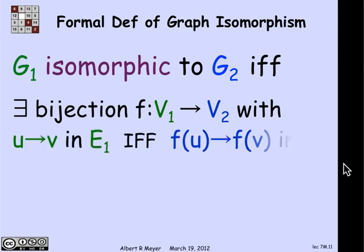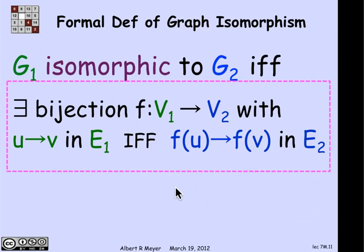With the property that if there's an edge between two vertices u and v in the first graph, then there's an edge between the corresponding two vertices f of u and f of v in the second graph. And that's an if and only if relation. There's an edge between f of u and f of v if and only if there's an edge between u and v in the original graph. That's the official definition of isomorphism for digraphs.